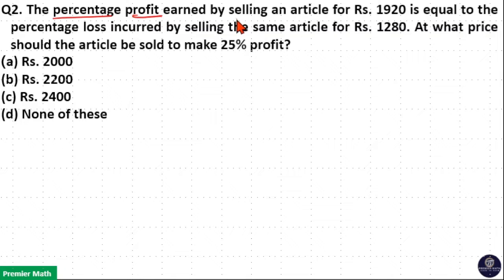The percentage profit earned by selling an article for rupees 19.20 is equal to the percentage loss incurred by selling the same article for rupees 12.80. At what price should the article be sold to make 25 percentage profit?